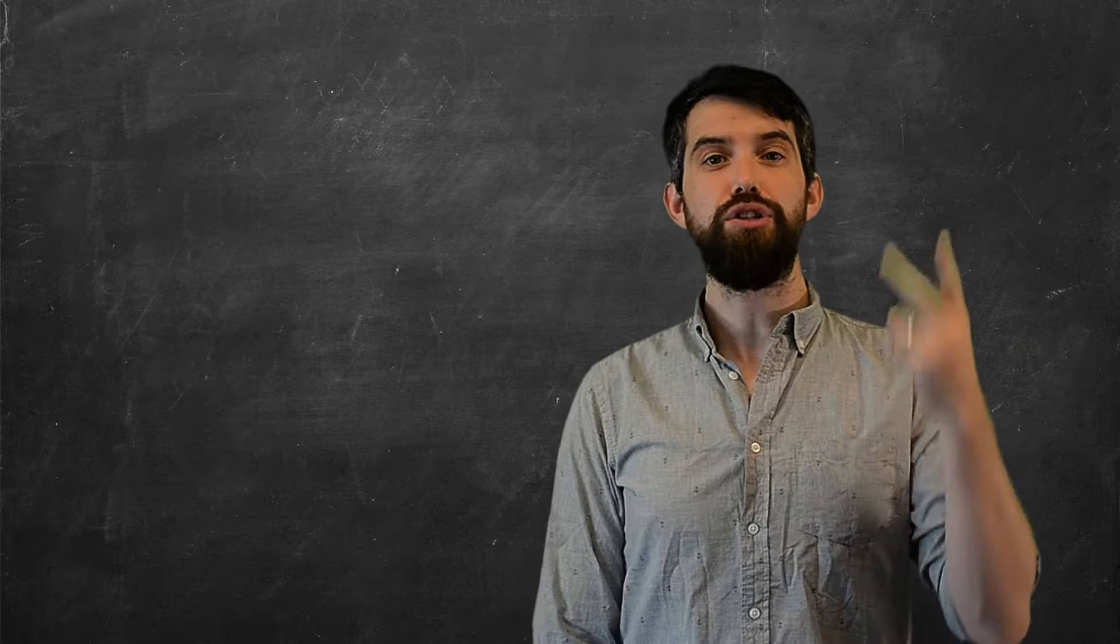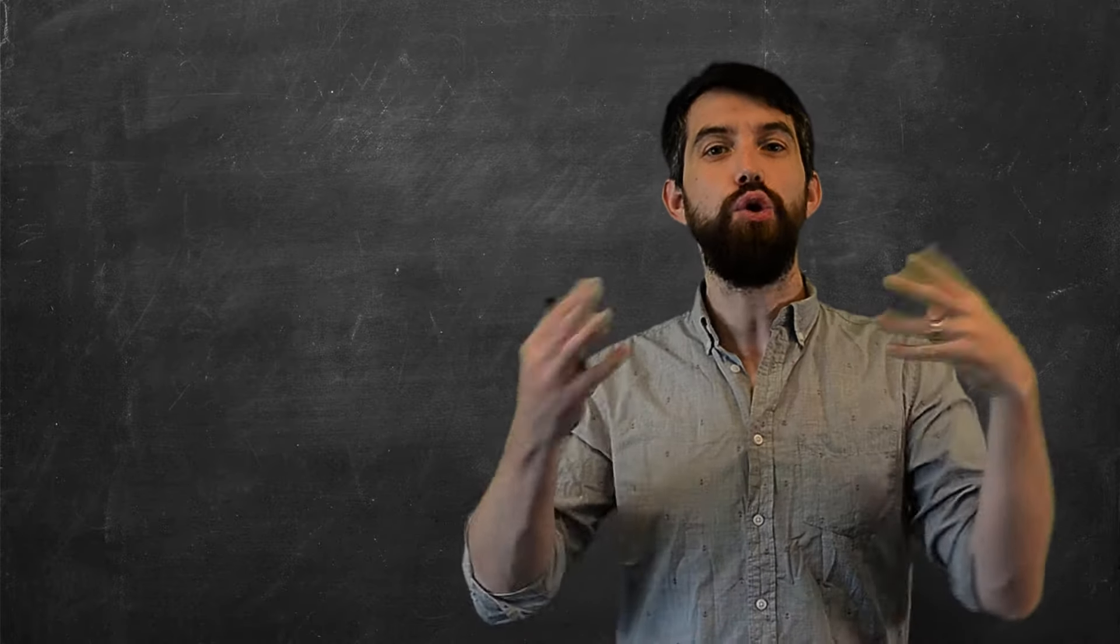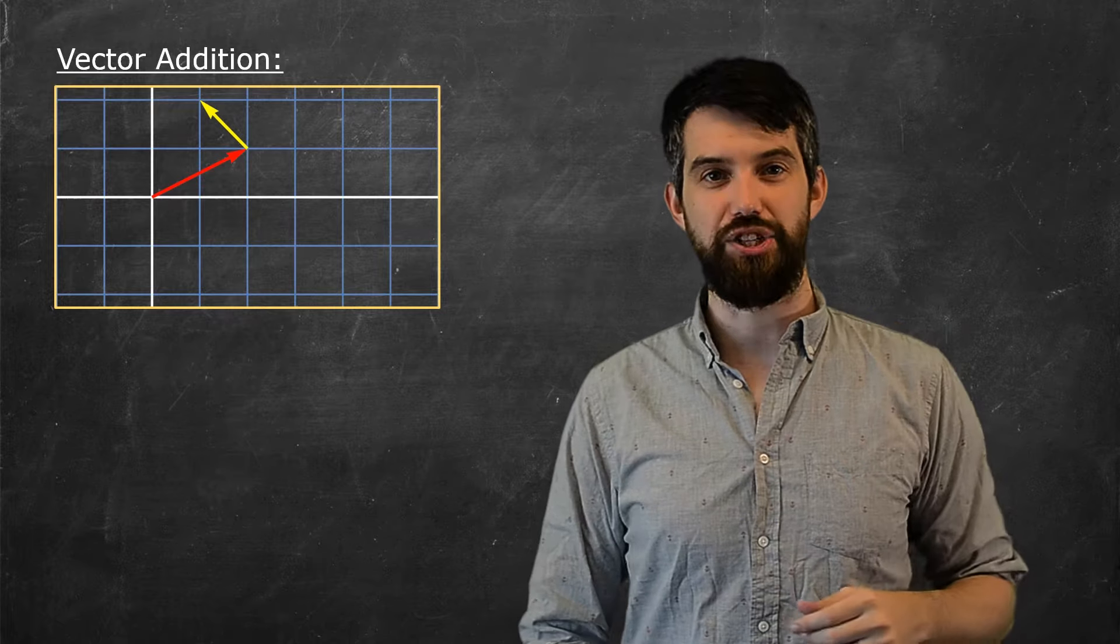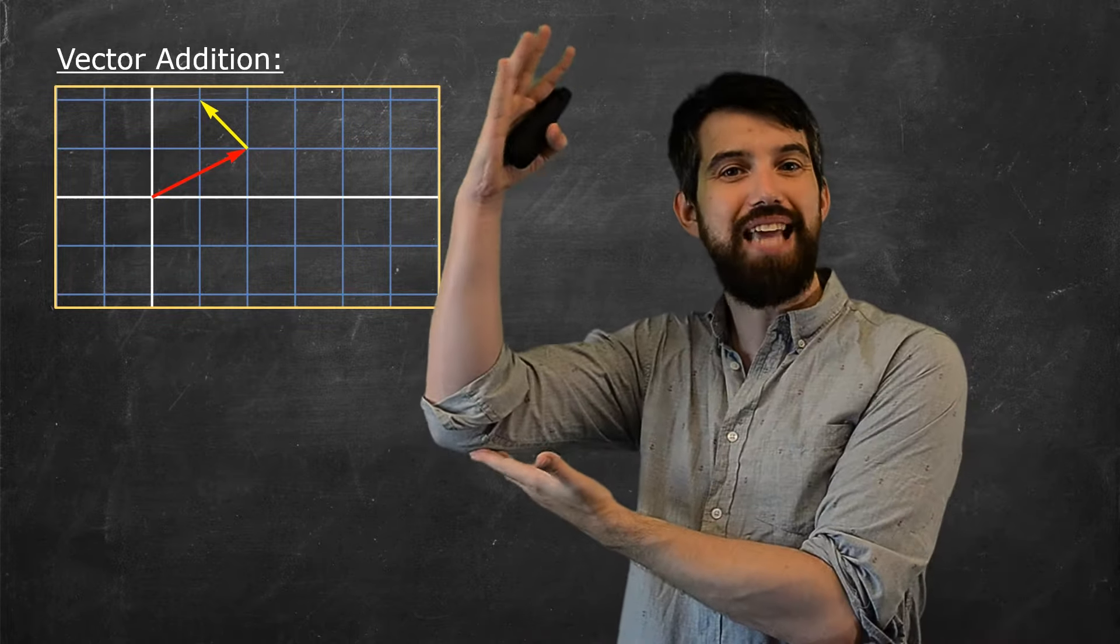At the core of linear algebra are two different operations, two different ways that we can construct new vectors out of old vectors. The first of them was vector addition, and they said if you had two different vectors you could do a sort of tip-to-tail addition of them.